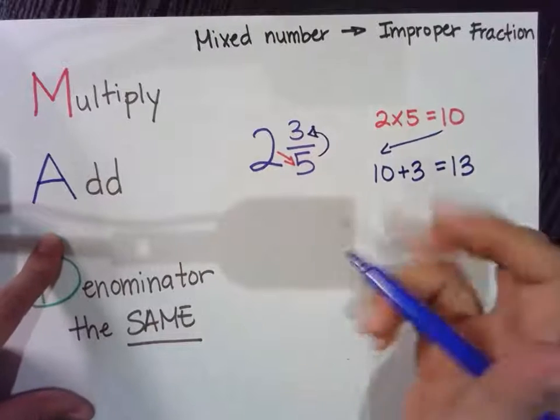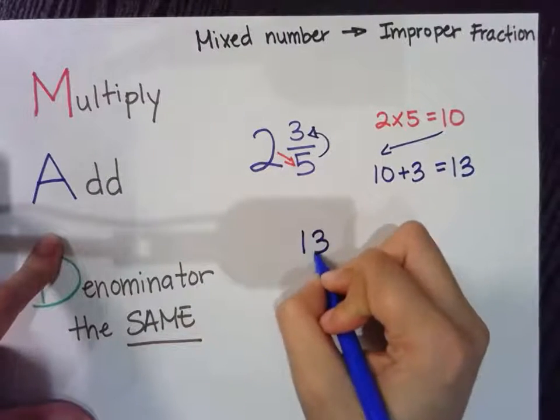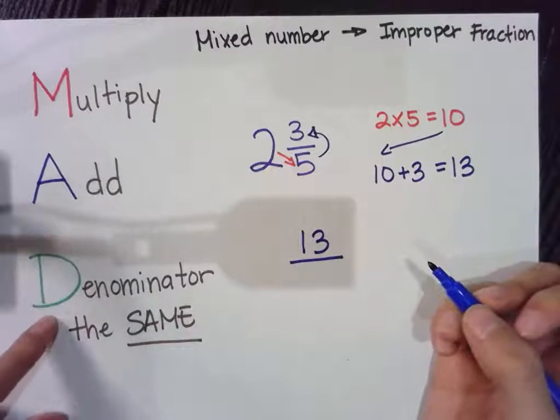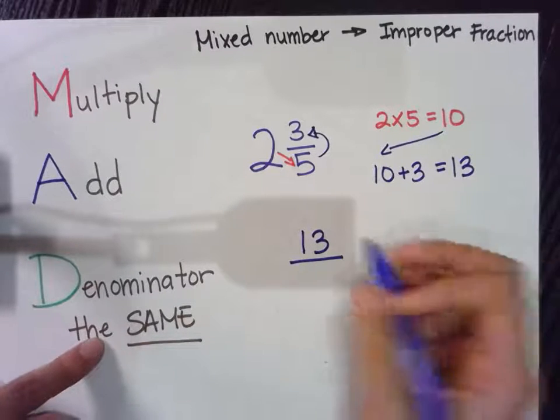So your new numerator is going to be thirteen over the denominator the same, five.